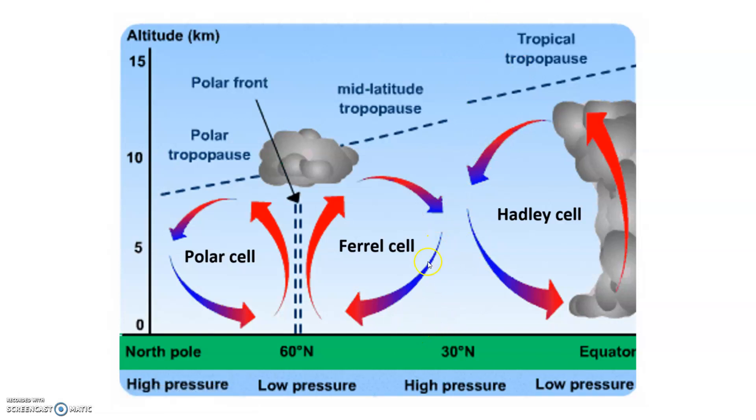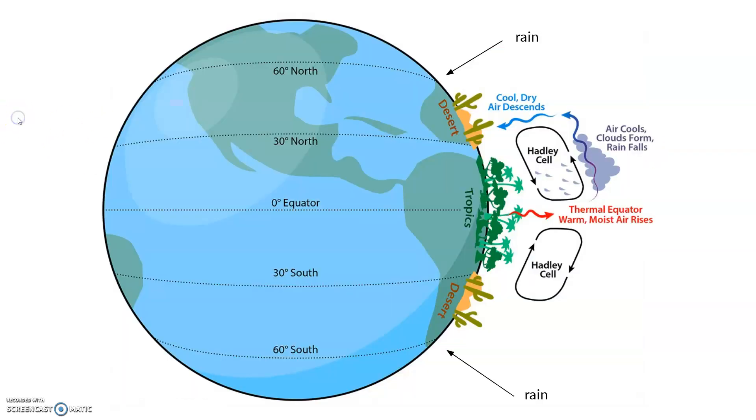Then we see as it will pick moisture back up and then rise at the 60 degree north and south latitudes and get more precipitation, since it's further up, closer towards the pole.